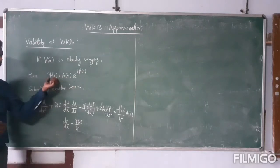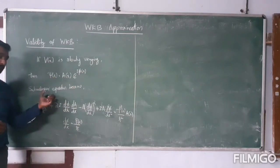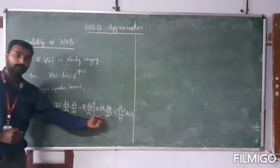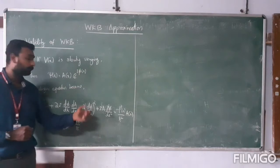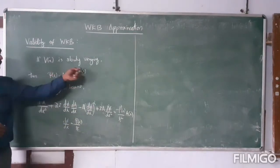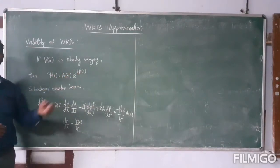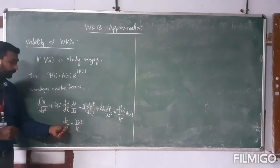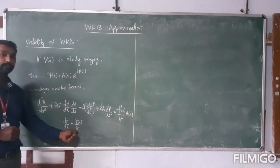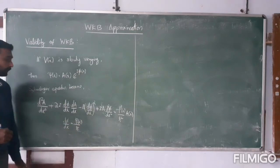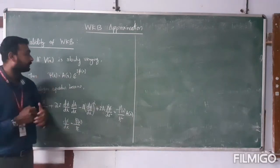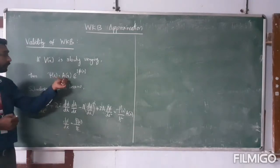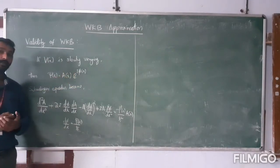If you apply this wave function in the Schrödinger equation, we get this expression — this is the basic result from the Schrödinger equation. I have written psi of x as A of x times e raised to i phi of x, and we have found that the first derivative of phi would be equal to the momentum number k of x. Now in order to validate this condition, if V of x is slowly varying, then both A of x and phi of x must be slowly varying functions.